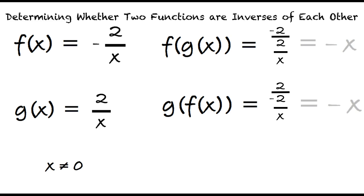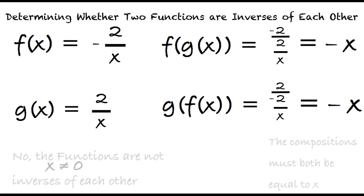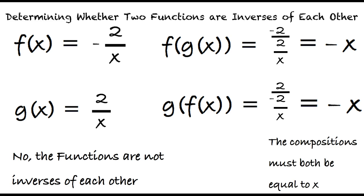Both of those equations simplify to negative x. The results of the compositions must both be exactly equal to x in order to say that the two functions are inverses of each other. So since these two functions are equal to negative x, we cannot say that these two functions are inverses of each other.